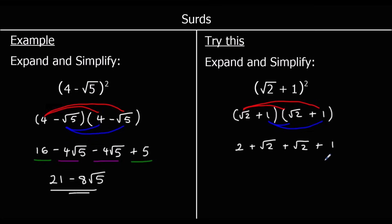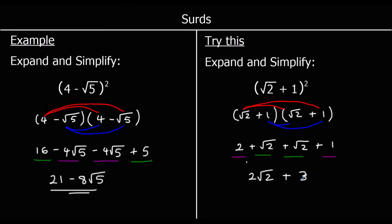So simplifying, we've got two root 2 terms and two numbers we can add together. It doesn't matter which way round we do it. If I add my root 2s first: 1 root 2 plus another root 2 is 2 root 2s. And 2 plus 1 is 3. So the answer is 3 plus 2 root 2.